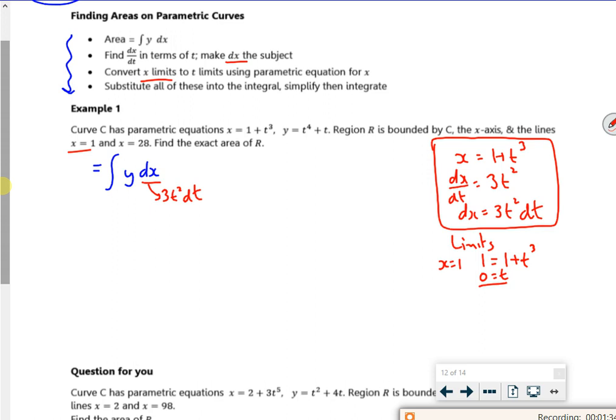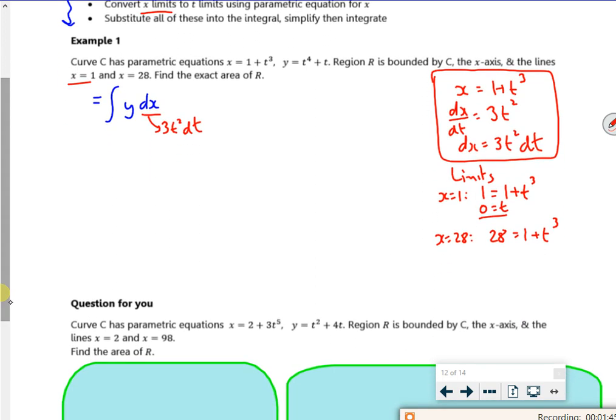And then for the 28, I've got 28 is 1 plus t cubed. If I take away the 1 it's 27, if I cube root it, it's 3. So these are my new limits.